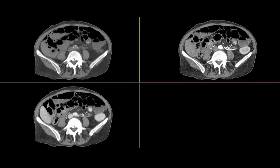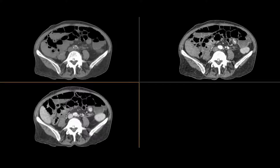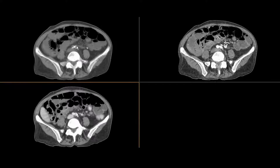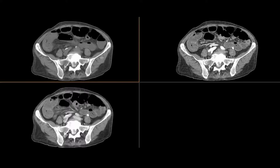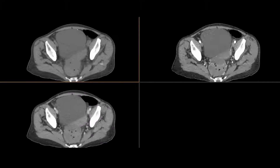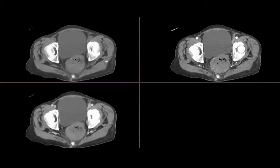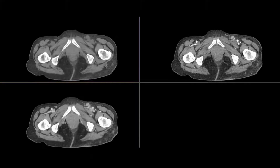There's no associated high-density material here, which confirms active contrast. And then when you look on a delayed phase, it actually pools in there. So this is an active GI bleed.